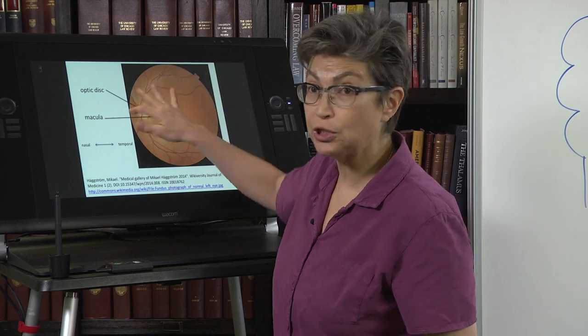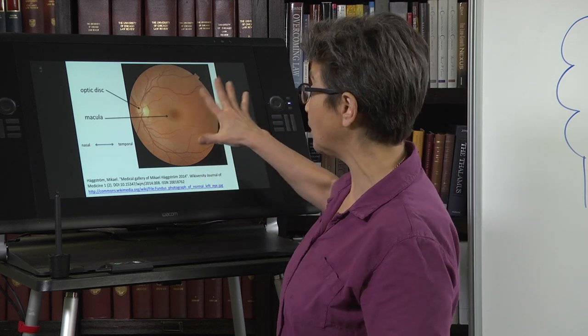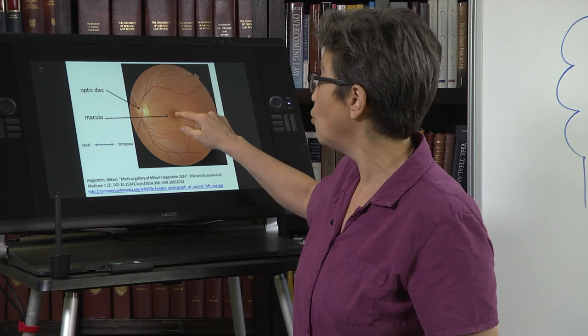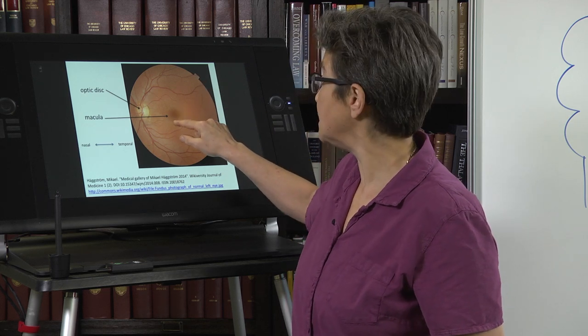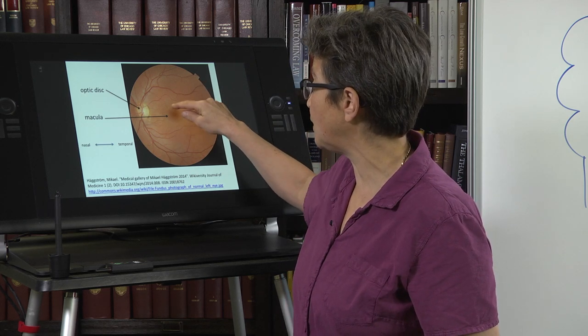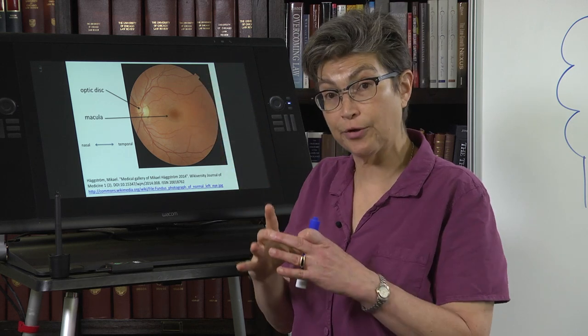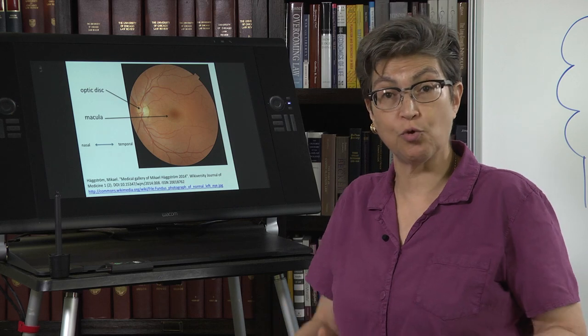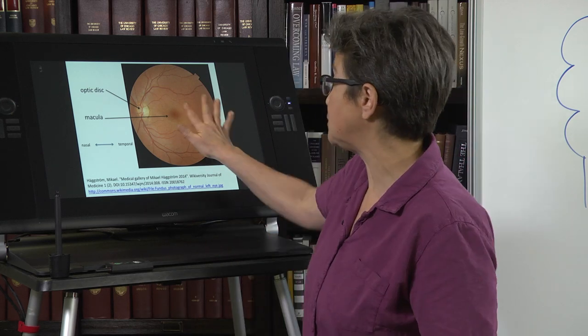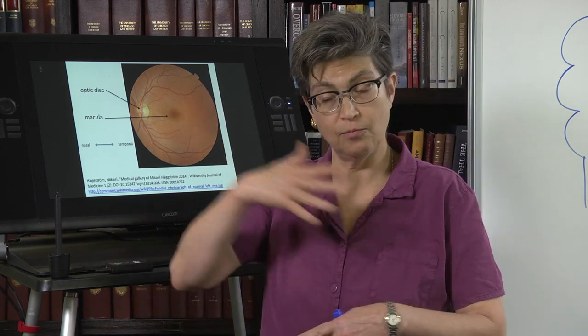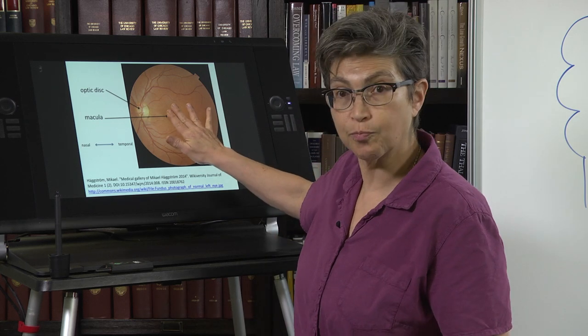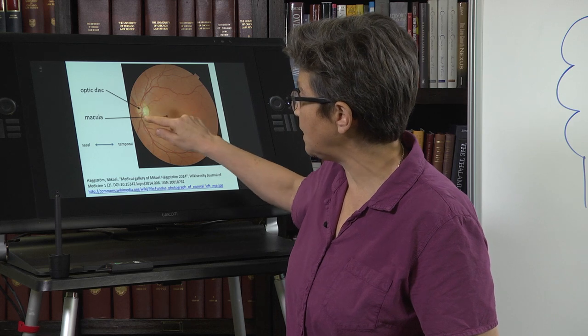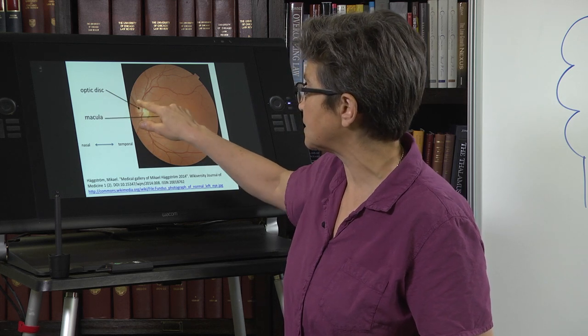Right in the middle is a pit called the fovea, and around that is a central area called the macula. That's where central vision is supported. It's very important—if this degenerates, there are problems with vision. But what we want to look at is this piece right here, called the optic disc. The optic disc is where the nerve head joins the retina.